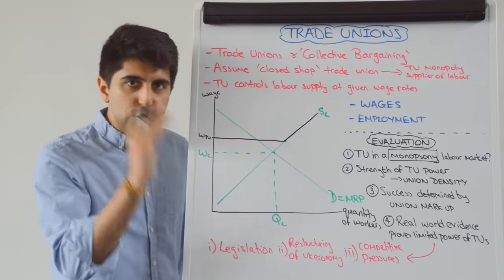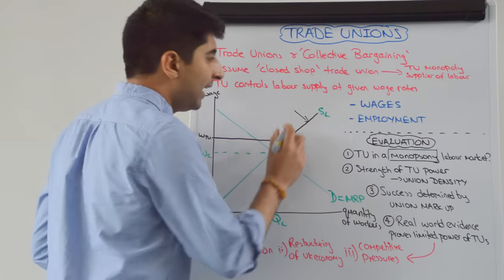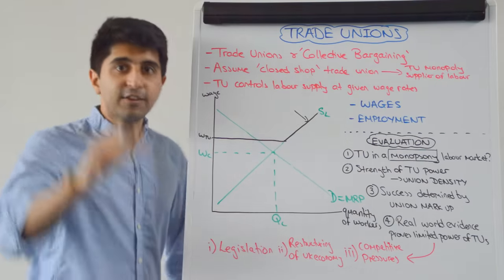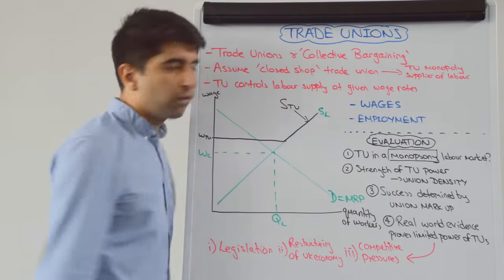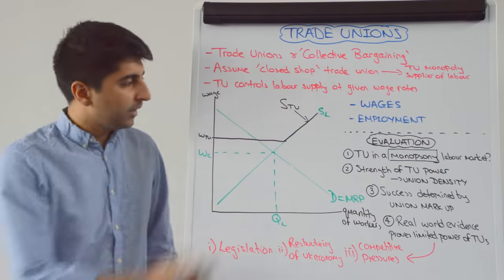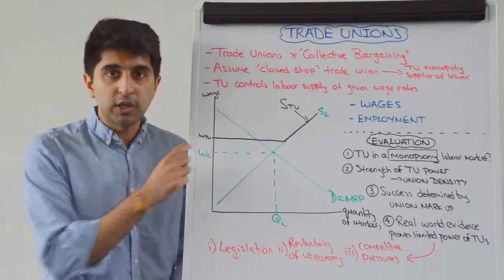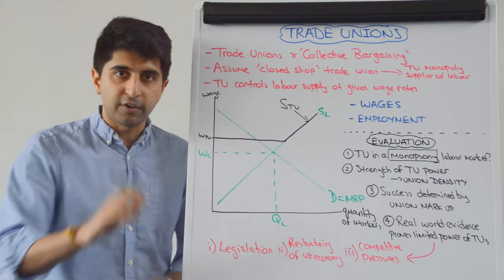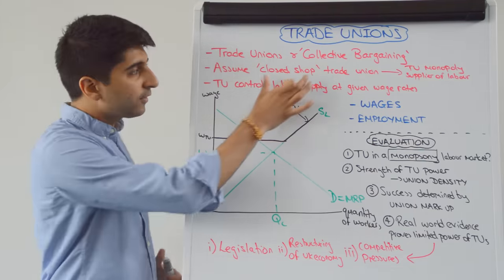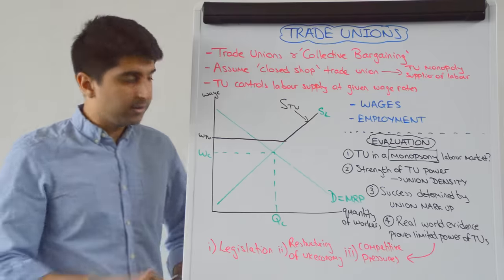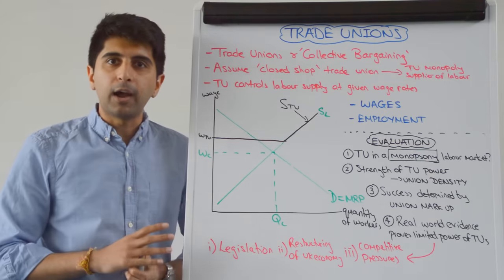So we have a new supply curve — the black line — which is the effective trade union supply curve, S_TU. That is the new supply curve we are working with because the trade union is bargaining for a higher wage. The trade union has a lot of power. Because of this closed shop agreement, the firm would have to accept the higher wage, since the trade union can organise a big strike if rejected.